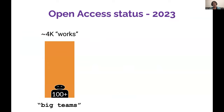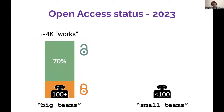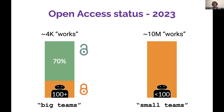Out of almost 4,000 works from big teams in 2023, if we look at open access status, 70% are open access publications. For comparison, doing the same count for smaller teams — less than 100 authors — only 42% are open access. So it seems like something is happening: if you have a really big team, you are more likely to make your work open access. I don't know what the mechanism is, it's just a pattern, but maybe big teams are more open.